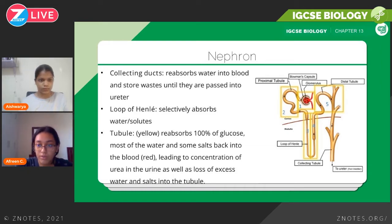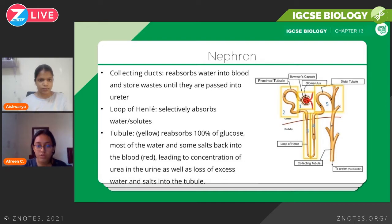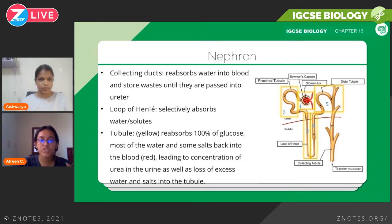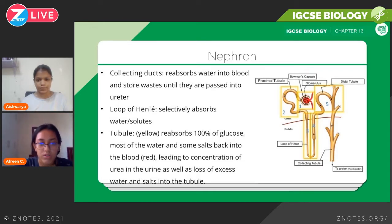Then you've got the tubule — there are two different types: proximal and distal. You don't need to know the specific types; you just need to know that the tubules are where glucose is reabsorbed, some water is reabsorbed, and salts are reabsorbed. This basically increases the concentration of urea in the urine. Ultimately the goal is to get rid of as much urea as possible, and along with that, water and salts are also lost.